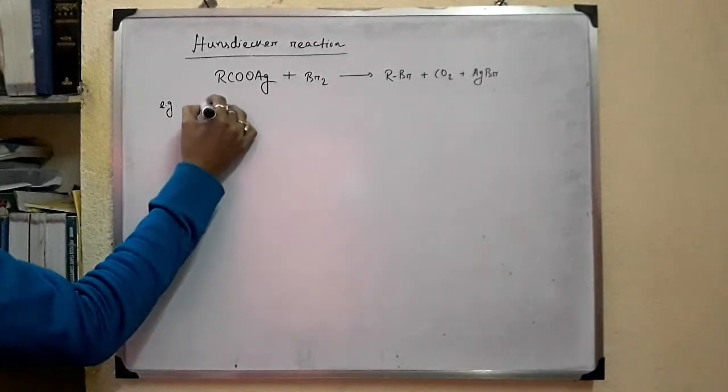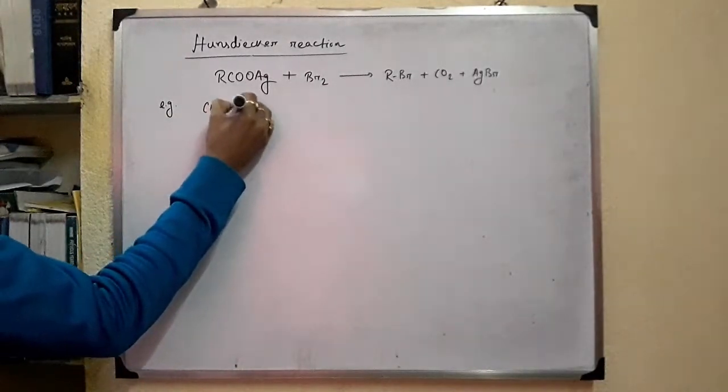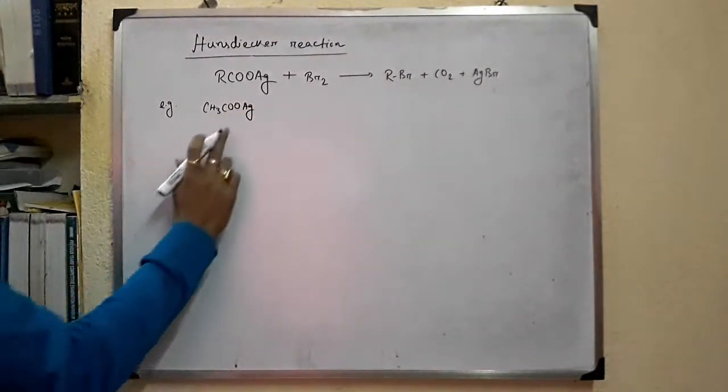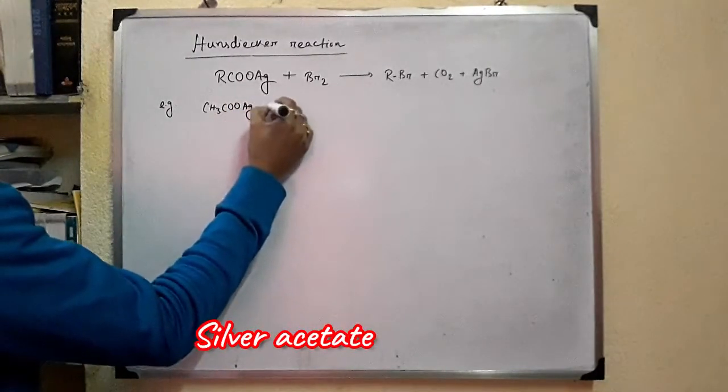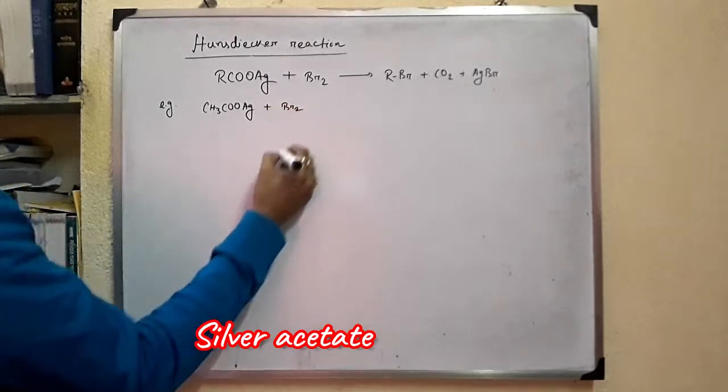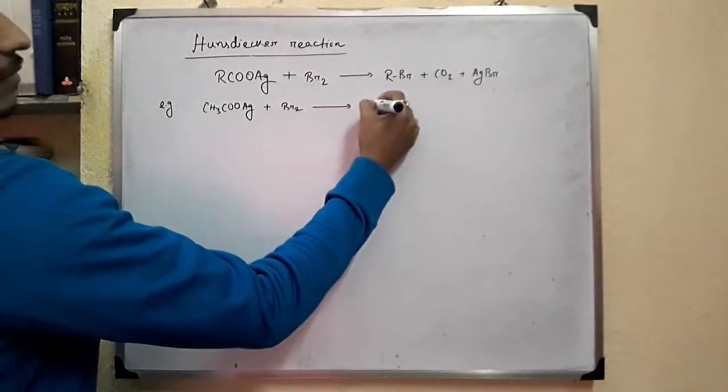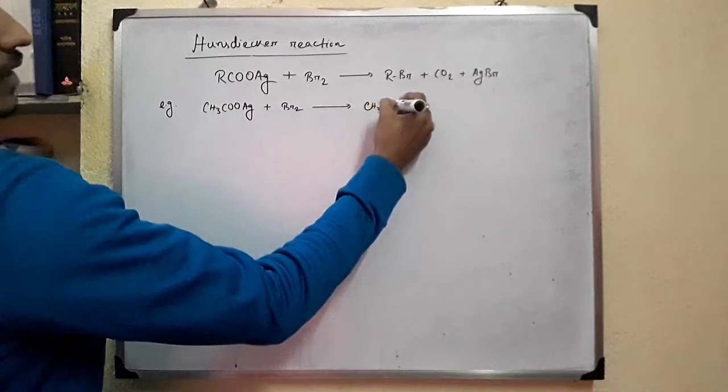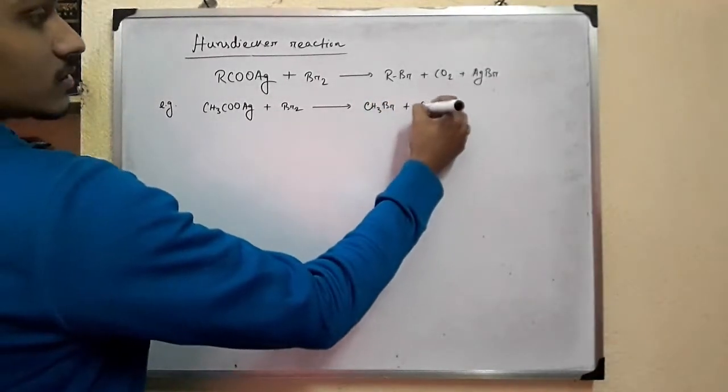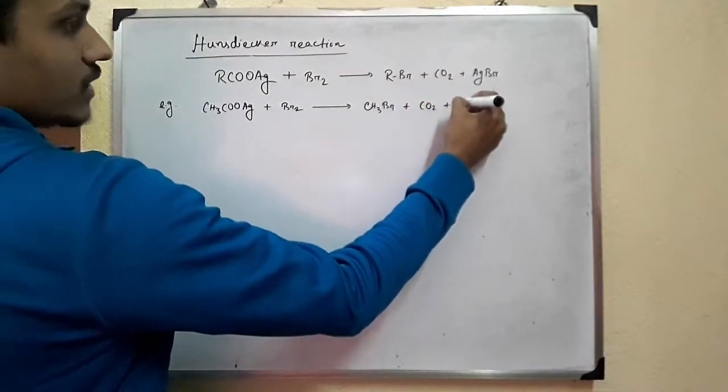For example, CH3COOAg, this is silver acetate when reacts with bromine it gives methyl bromide plus CO2 plus AgBr.